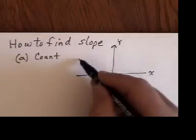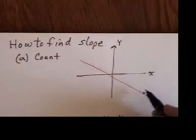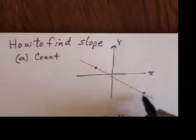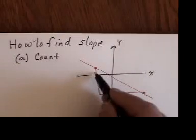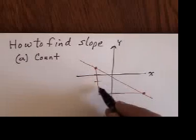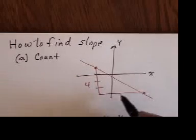Okay, so if I have a line there, I find any two points on the line, I put in my triangle, and I count that there is one, two, three, four down this way.